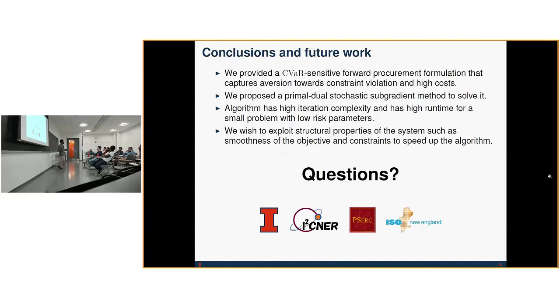So in this presentation, we provided a CVaR-sensitive formulation that captures this trade-off or willingness to accept high costs or constraint violation. And then we proposed an algorithm to solve this using a stochastic primal-dual subgradient method, which we know to be very slow. And in the future, we wish to speed this up by taking advantage of smoothness of the parameters or some other techniques. Any questions?